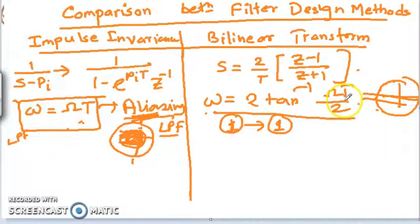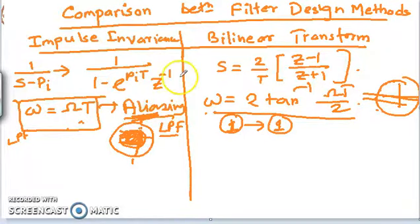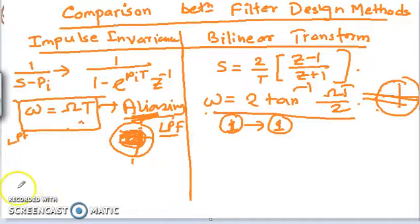Because the bilinear transformation gives a unique frequency mapping, you can design all different types of filters using it. The impulse invariance method, however, is restricted to low-pass filter design only.